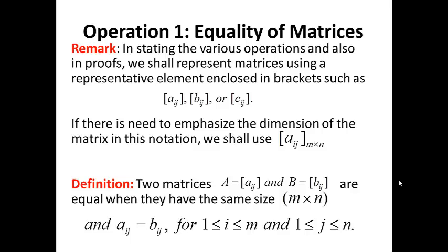Operation 1: equality of matrices. Before we give the definition, let us make a quick remark. In stating the various operations and also in proofs, we shall represent matrices using a representative element enclosed in brackets, such as Aij, Bij, or Cij. If there is need to emphasize the dimension of the matrix in this notation, we shall include the dimension M by N on the lower right-hand corner of the representative element in brackets.